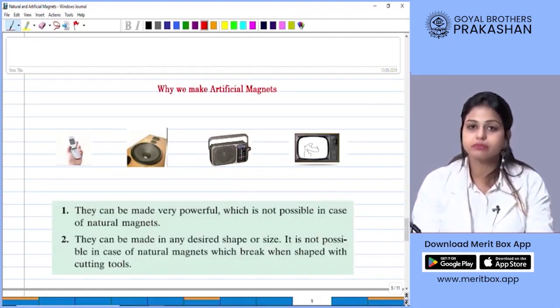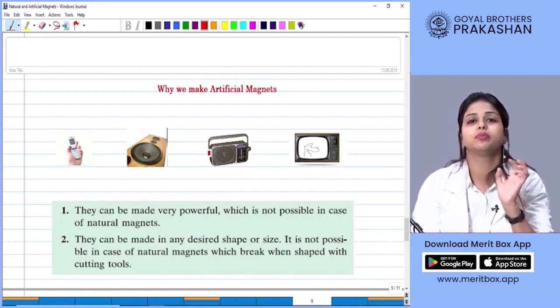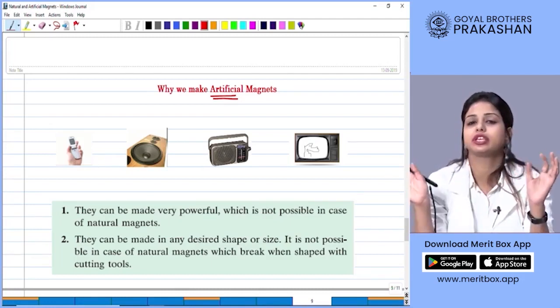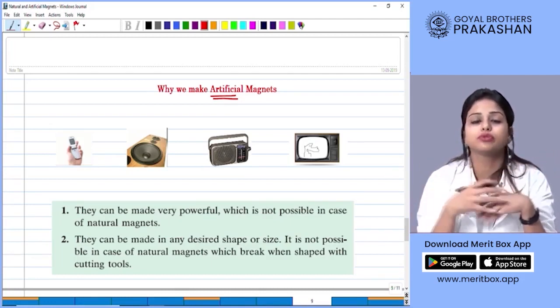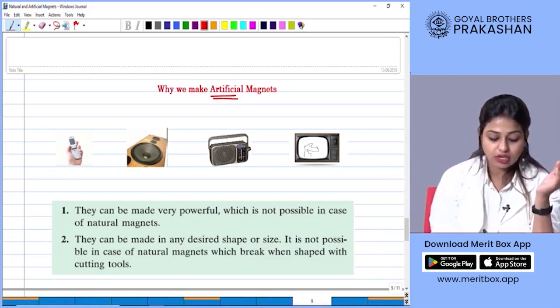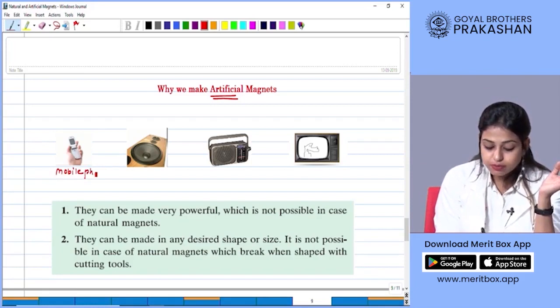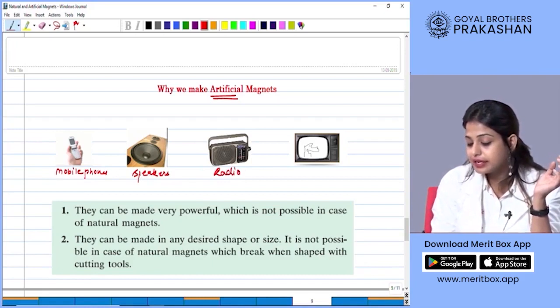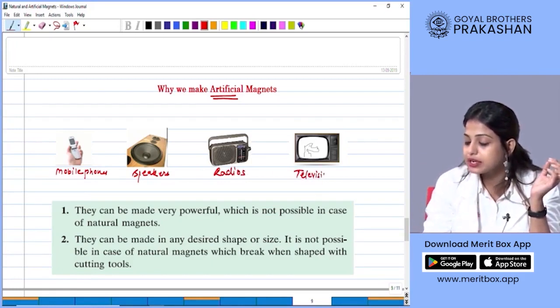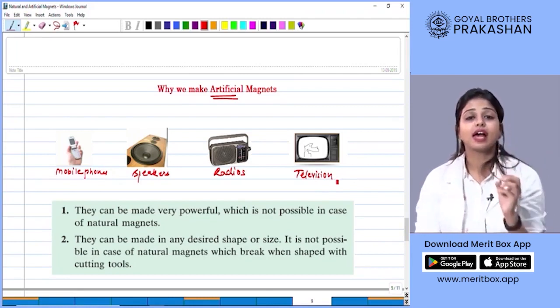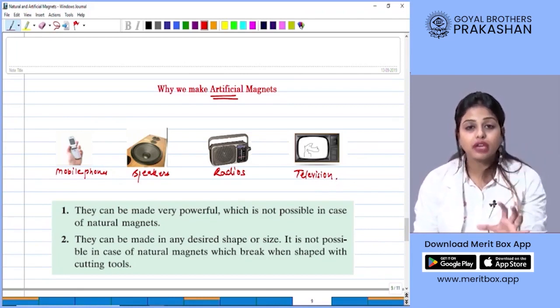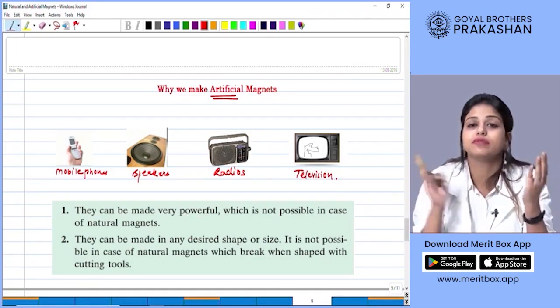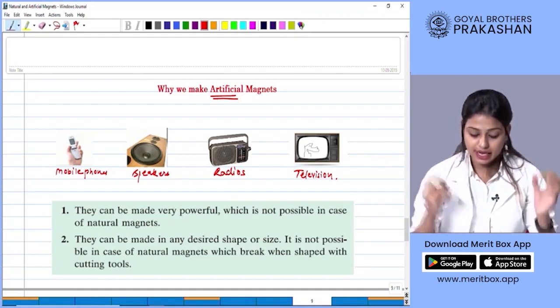Now there comes an important thing. Why do we need to make artificial magnets? Now magnets find immense application in so many things around that we cannot work without. Let's say your mobile phones, your speakers, your radios and television. All these electronic components have magnets in them. So when we need to use magnets in such diverse technologies, we have to make them artificially. Let's read the points.